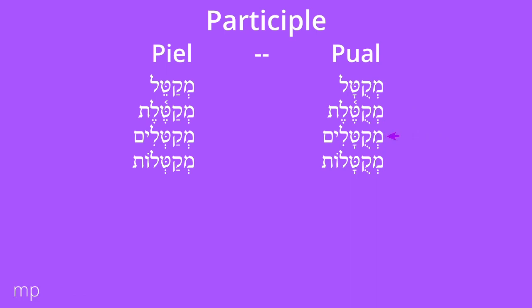In the Piel we have mekatel, in the Pual mikutal. In the Piel we have mekatélet, in the Pual mikutélet. To translate the Pual participle, instead of 'to be' or 'being,' translate it as 'being slaughtered.' That covers strong verbs. For weak verbs, it's just as simple as in the Piel — we still see our kibbuts and our dagesh forte.